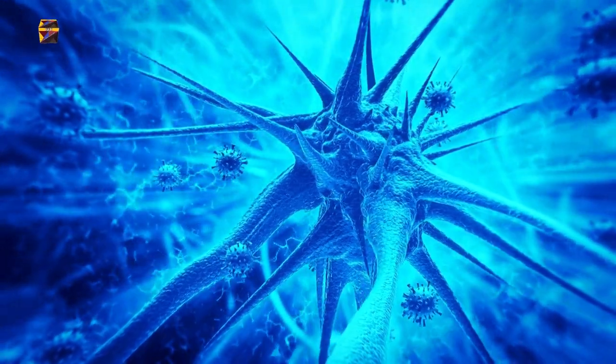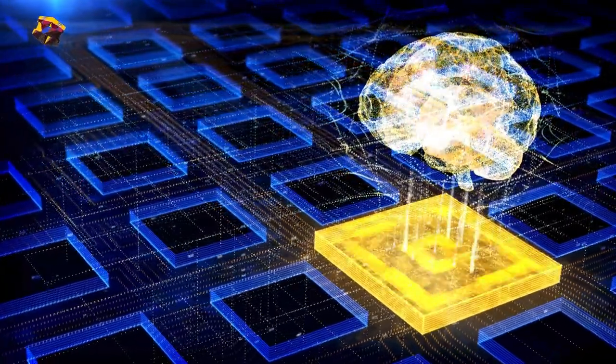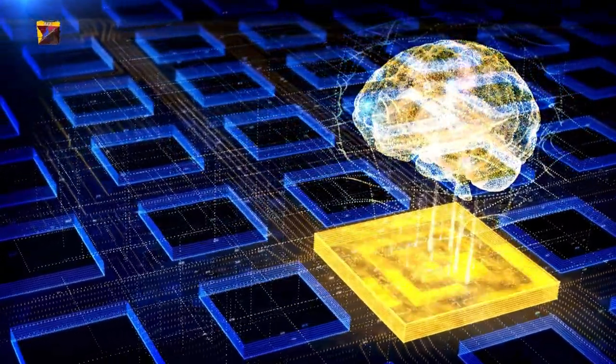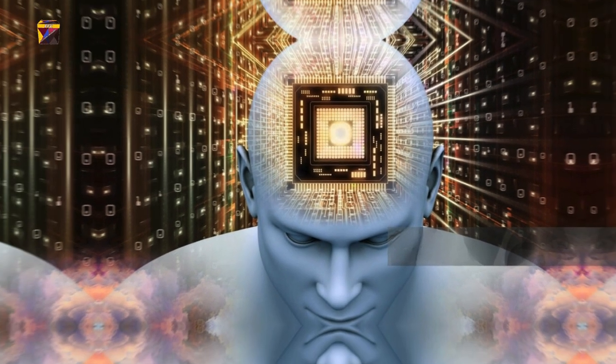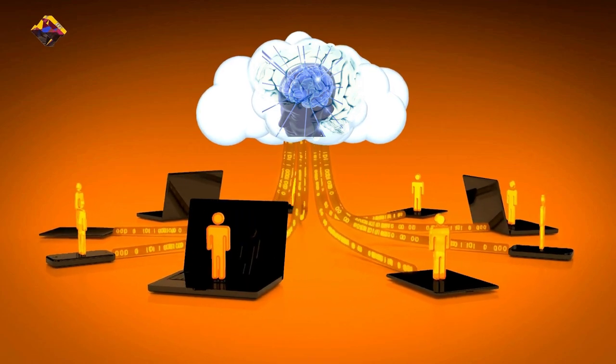Once the electrodes are in place, they are connected to a small chip implanted just beneath the skin. This chip processes the signals from the brain and can communicate wirelessly with external devices.